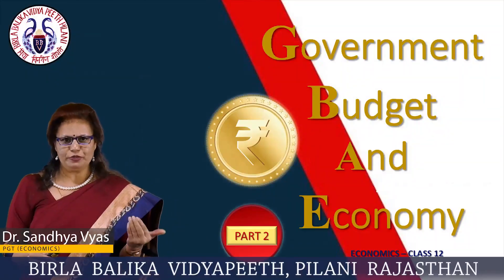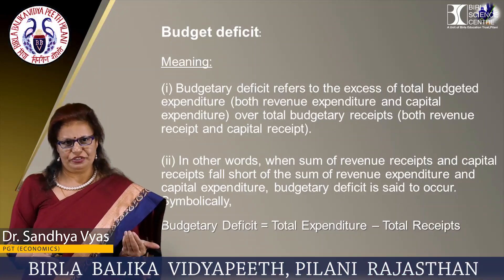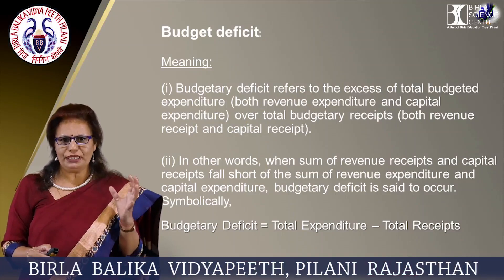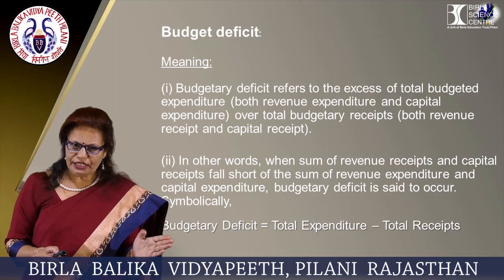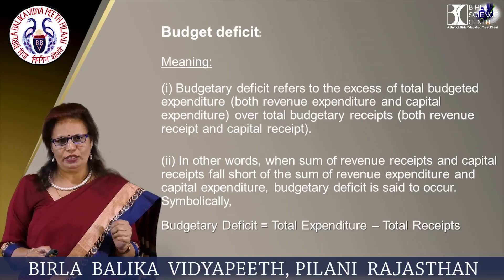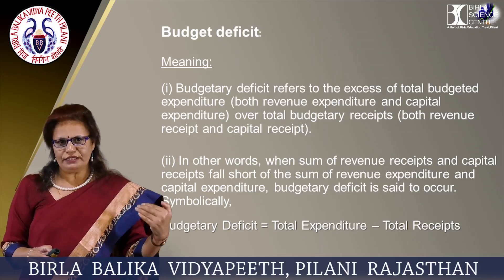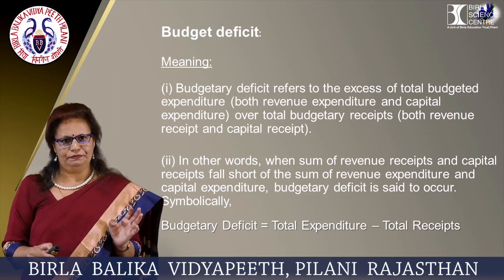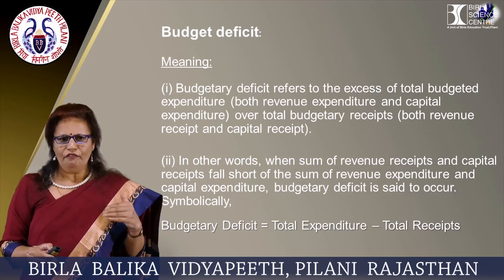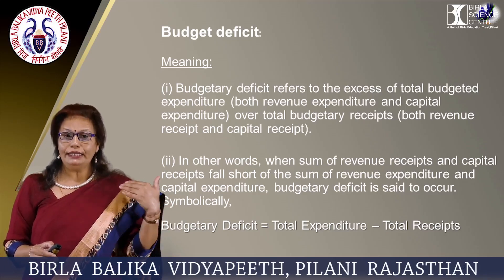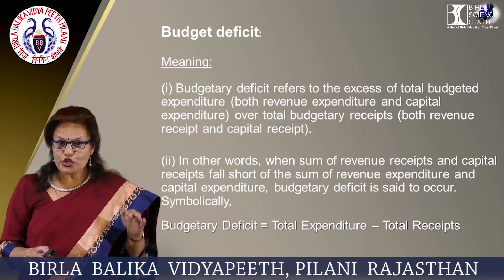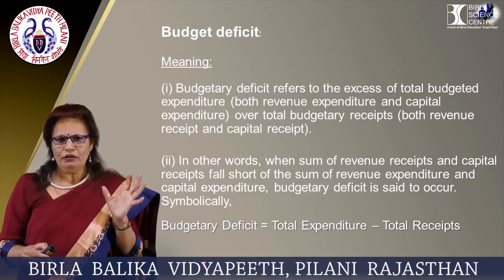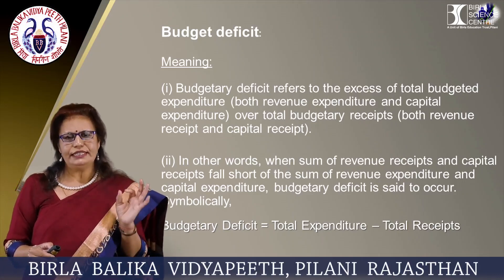Now we are going to study different types of budget deficit. Budgetary deficit refers to excess of the total budgeted expenditure, both revenue expenditure as well as capital expenditure, over total budgetary receipts, both revenue receipts and capital receipts. In other words, when the sum of revenue receipts and capital receipts fall short of the sum of revenue expenditure and capital expenditure, budgetary deficit is said to occur.